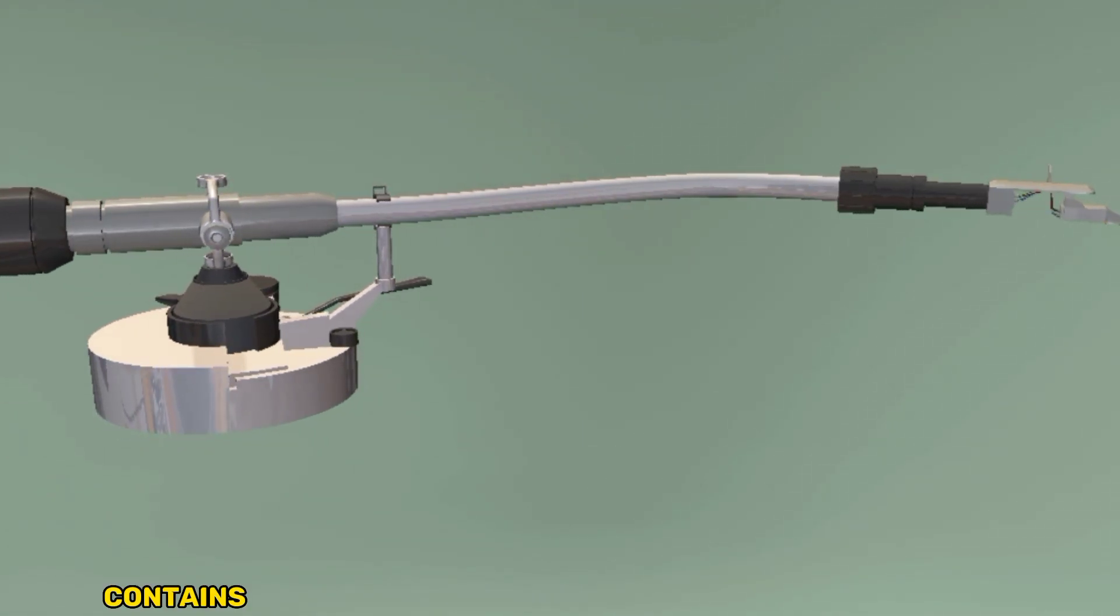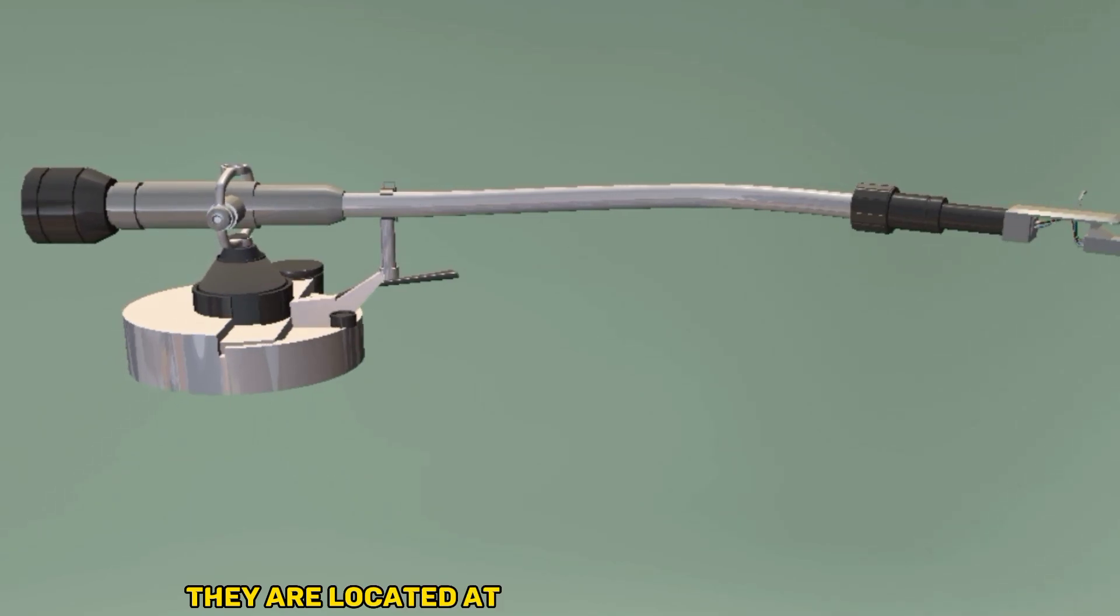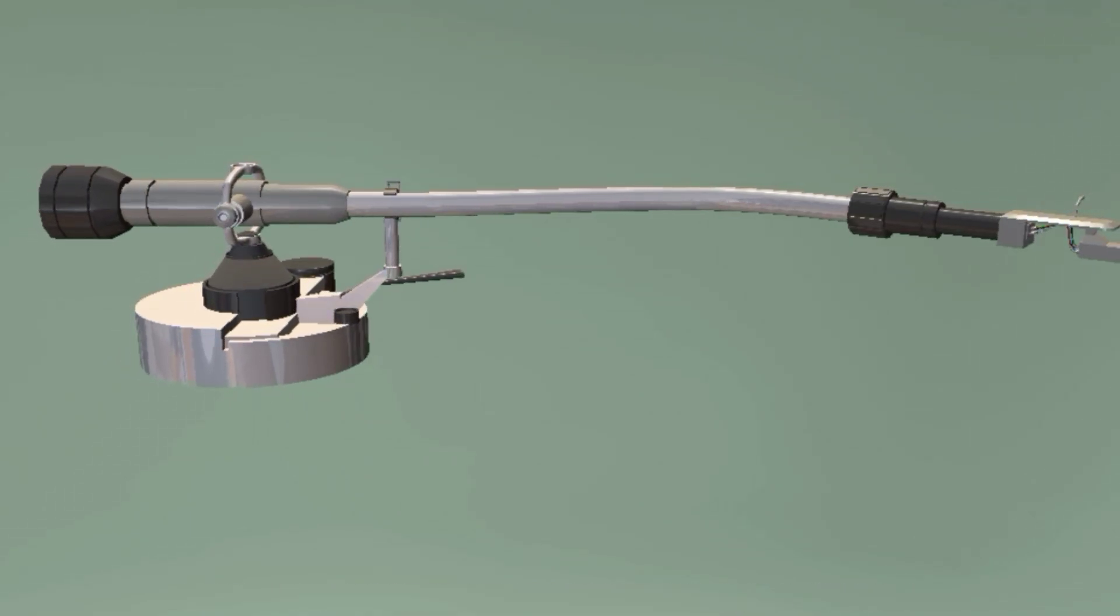The tone arm contains the magnetic cartridge and the counterweight. They are located at separate sides of the arm. The counterweight serves to adjust needle pressure.